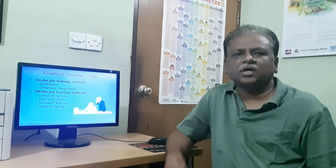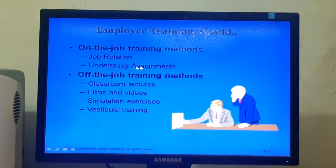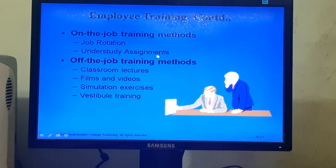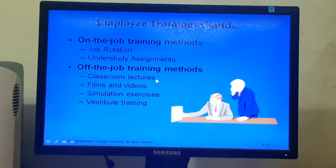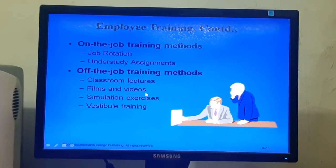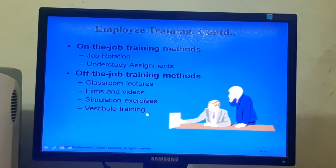Now we shall discuss different methods of training. Training methods are divided into two types: on-the-job training and off-the-job training methods. Under on-the-job training, job rotation and understudy assignment methods are used. Under off-the-job training methods, classroom lectures, films and videos, simulation exercises, and vestibule training are used.